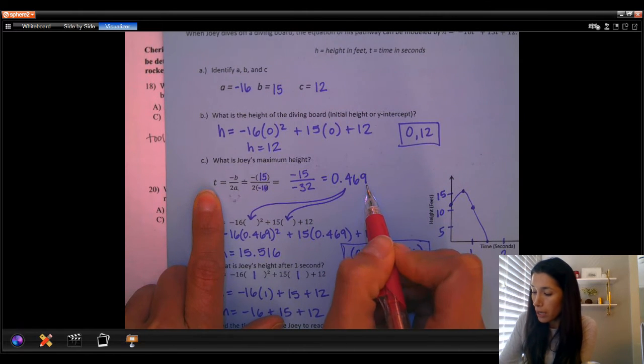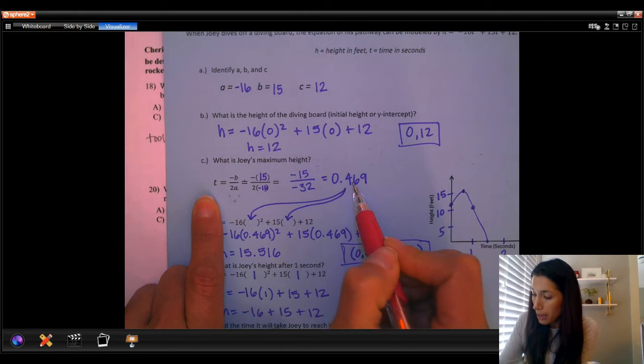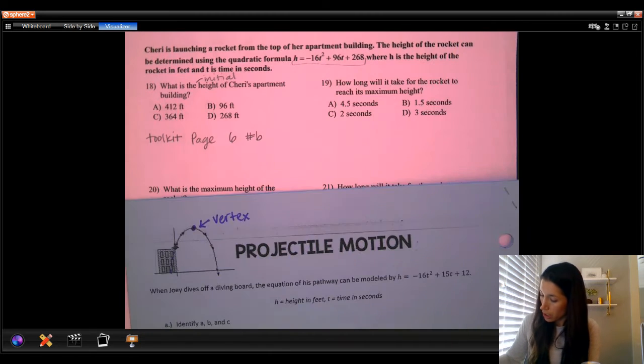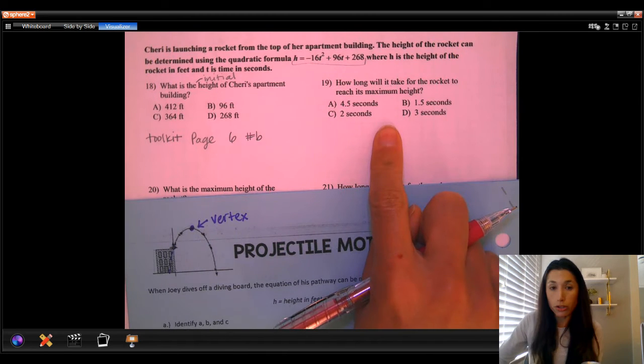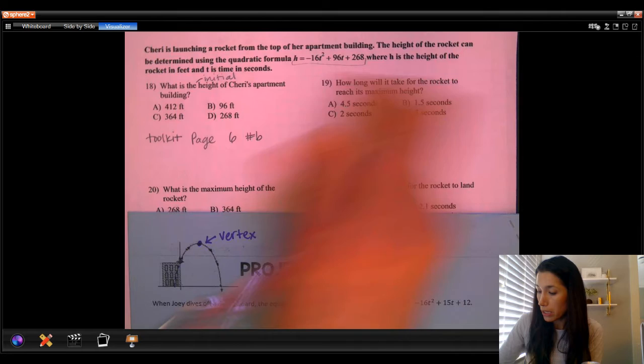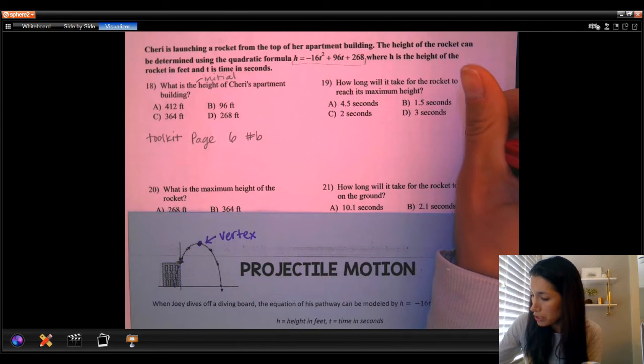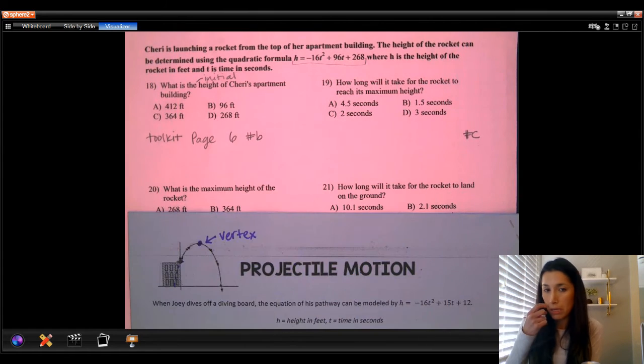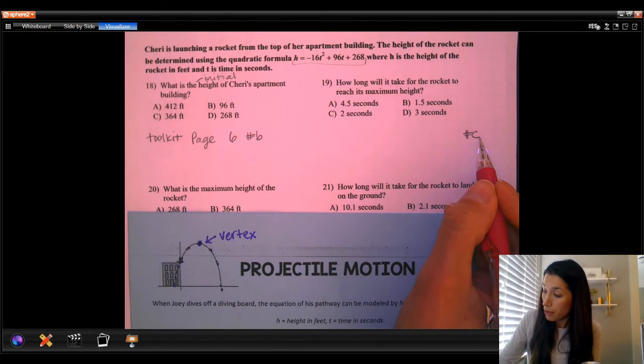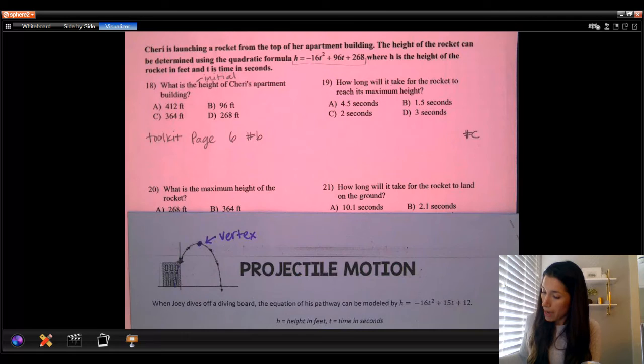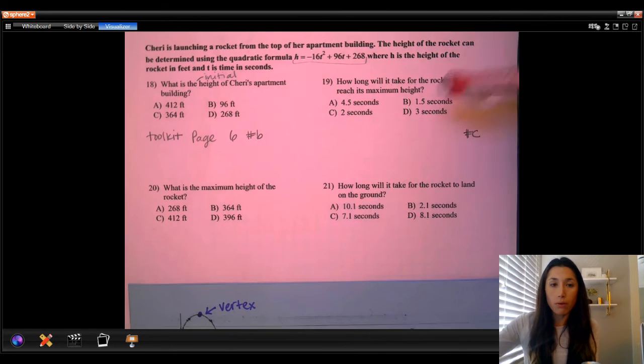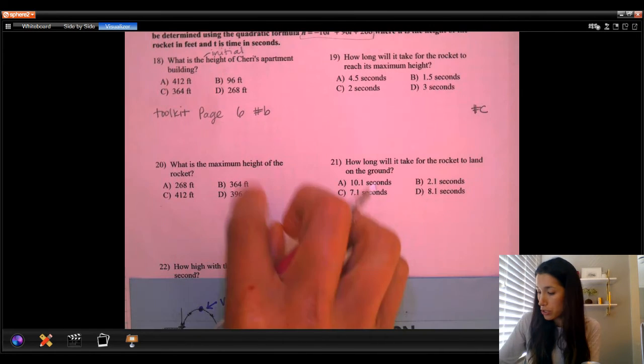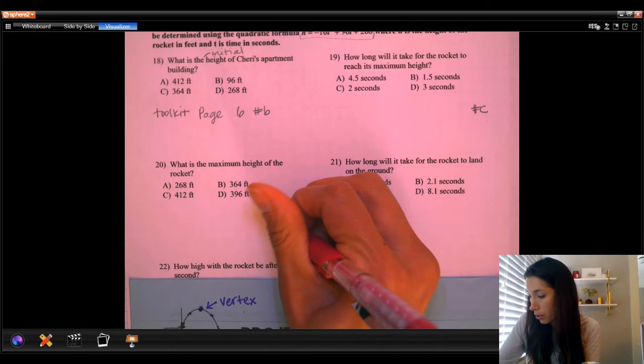which is what we did here. Then once we figured out the time, that would be this question here, question C on our toolkit. So toolkit page six, this is question number C. Sorry, this is confusing. That doesn't mean the answer is number C. This is kind of the first part of it. You want to figure out time equals, and then the maximum height will be what you get when you plug that in. This is also question number C from the toolkit.